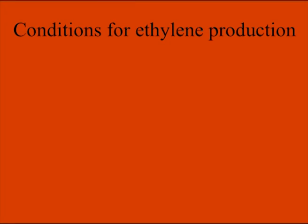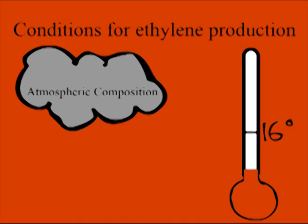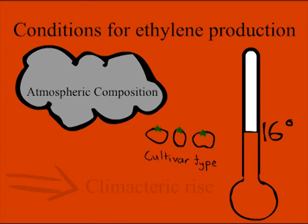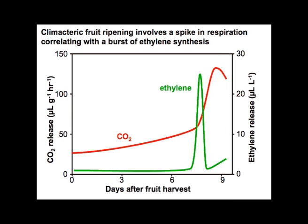So what are the conditions for ethylene production? Temperature needs to be above 16 degrees to initiate ethylene production. This is coupled with the climacteric rise, which is an increased rate of respiration. As seen in the graph, an exponential increase in ethylene is accompanied by an increase in CO2, which results from respiration.